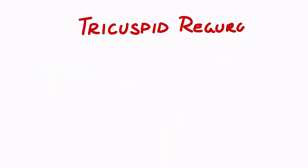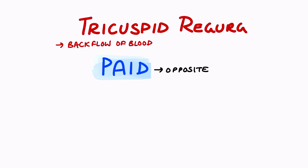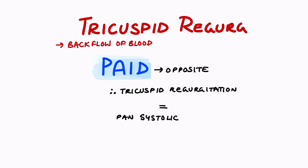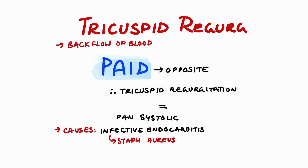Finally, tricuspid regurgitation is another important murmur to remember. This is due to the backflow of blood in the tricuspid valve. Using the opposite of the PASS PAID mnemonic, tricuspid regurgitation is also a pan-systolic murmur, similar to mitral regurgitation. Tricuspid regurgitation is often associated with infective endocarditis, specifically in IV drug users. This is because the tricuspid valve is the first valve that comes into contact with blood injected with illicit drugs, so pathogens like Staphylococcus aureus can colonize this valve. A good way to remember this is the phrase 'Do you want to TRY some drugs,' with emphasis on TRI — spelled T-R-I — for tricuspid regurgitation.